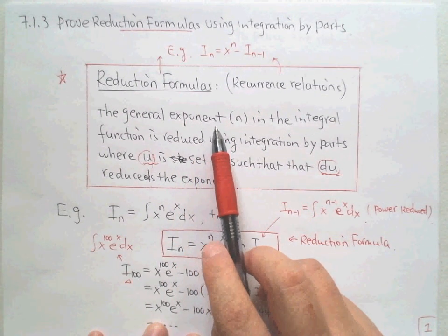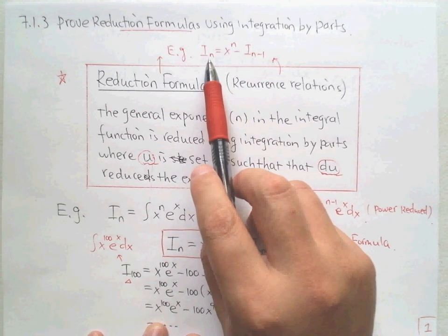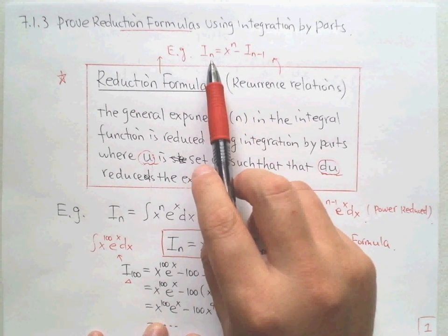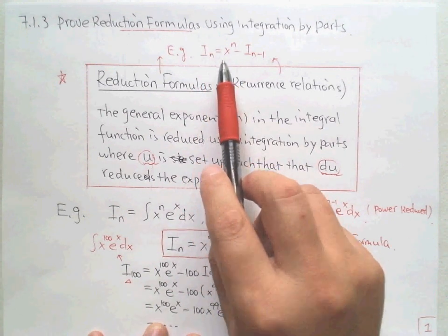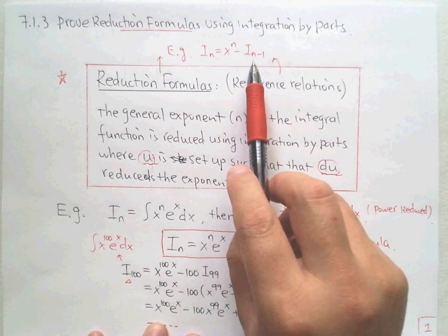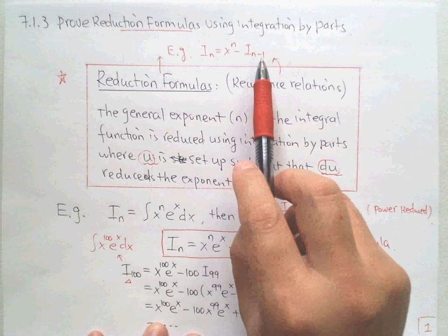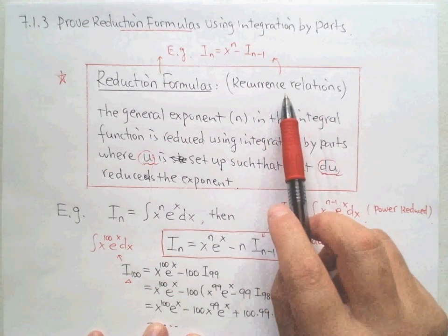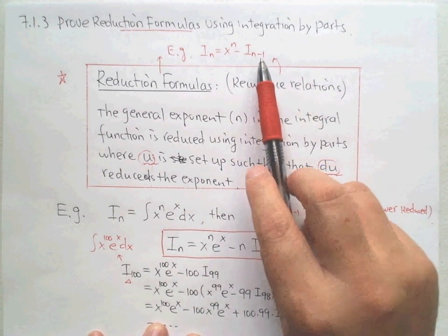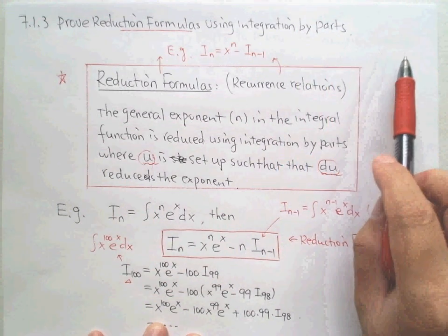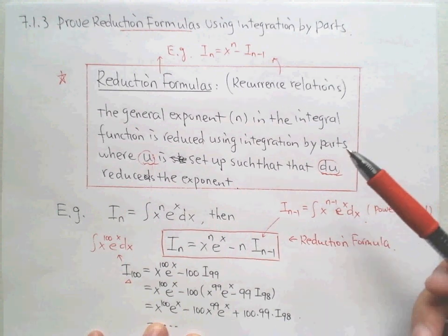Let's look at this example. If I_n means integration linked to n — usually n is the power inside the integral function — we look at the reduction formula. We can reduce the power; it goes to n minus 1. We also call it a recurrence relation. If we move one more step, n minus 1 can reduce to n minus 2. The power goes down, and finally it goes to a power of 0 or 1, and then we get everything done.